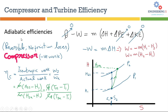For a compressor, the compression is adiabatic, meaning there is no heat flow into or out of the system. So this term Q is equal to zero.